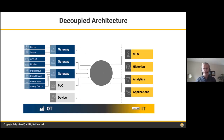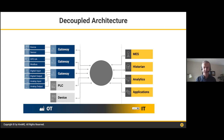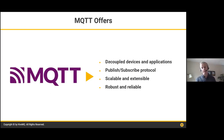We need to start thinking about more decoupled architectures where the equipment doesn't know about the applications it communicates with. There's a common data source where applications can get data and hardware can publish data to. This decoupled architecture is best implemented with a protocol like MQTT. MQTT has been around a long time — it was created in the 1990s for oil and gas pipeline monitoring — and has emerged as a very popular and successful IoT protocol across many industries, including manufacturing and industrial automation.